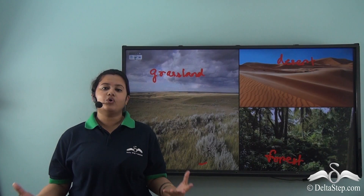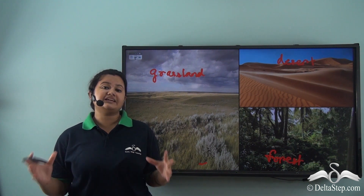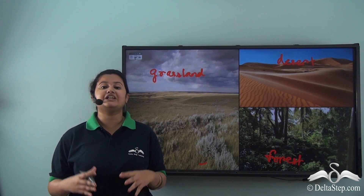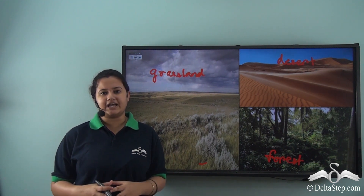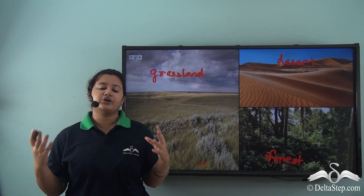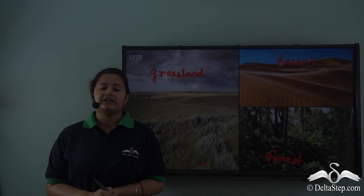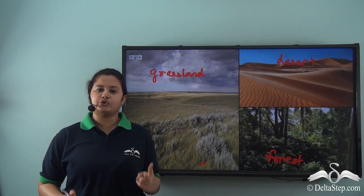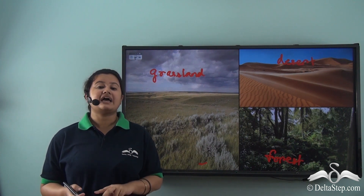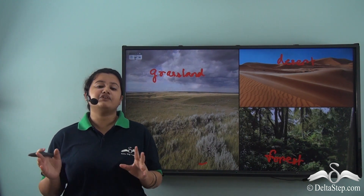Now that we know what a plain is, these plains can be classified into various types based on their process of formation. Plains are mainly of two types: structural plains and depositional plains.